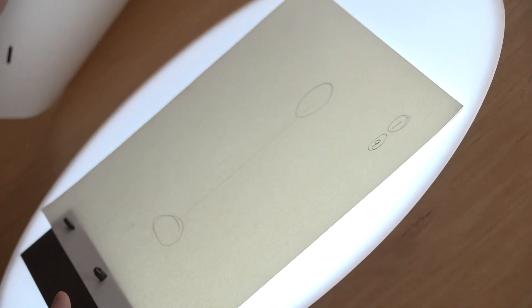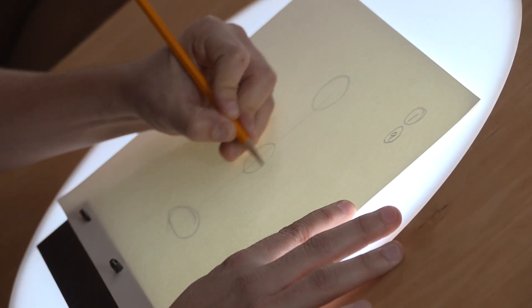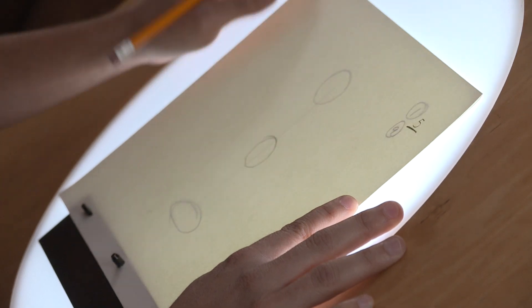Now I can draw the in-betweens using these key poses as a guide. I'll draw frame five in the middle. We call this a breakdown.